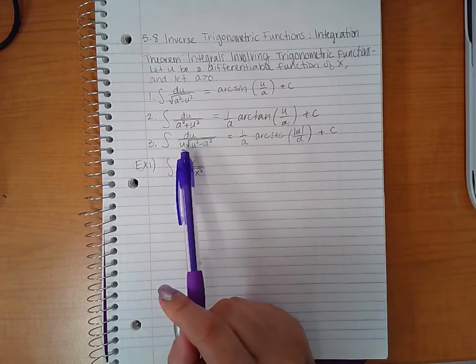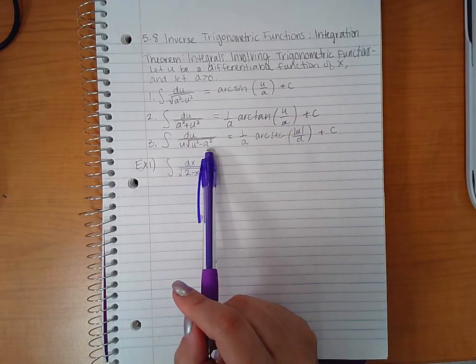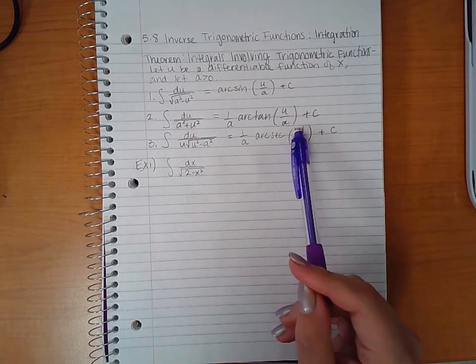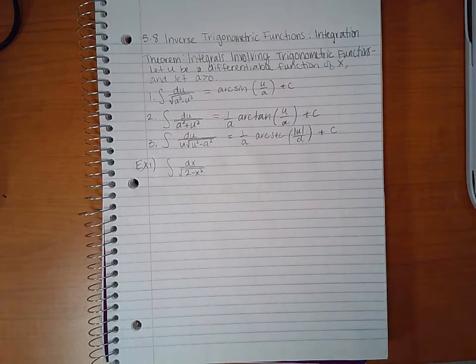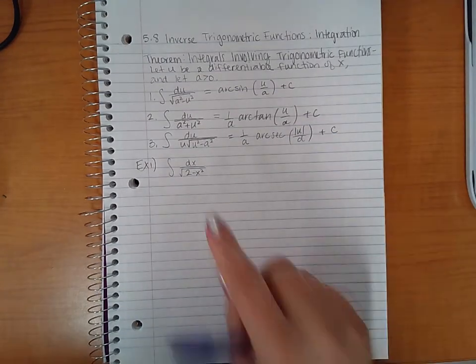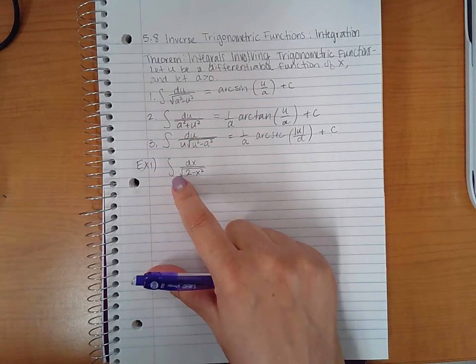And then the du over u square root of u squared minus a squared is one over a arc secant of the absolute value of u over a plus c. So for our first example, we have here you can kind of tell that this will be one.